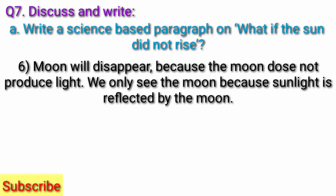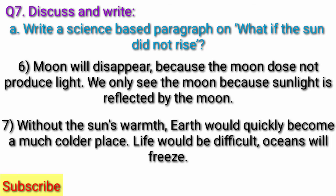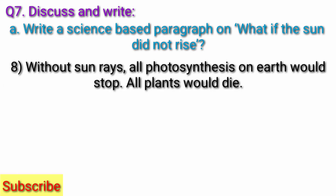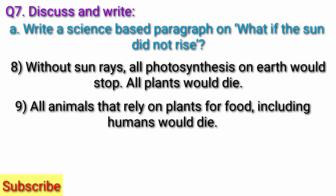The moon will disappear because the moon does not produce light — we only see the moon because sunlight is reflected by it. Without the sun's warmth, Earth would quickly become a much colder place. Life would be difficult. Oceans will freeze. Without sun rays, all photosynthesis on Earth would stop. All plants would die. All animals that rely on plants for food, including humans, would die.